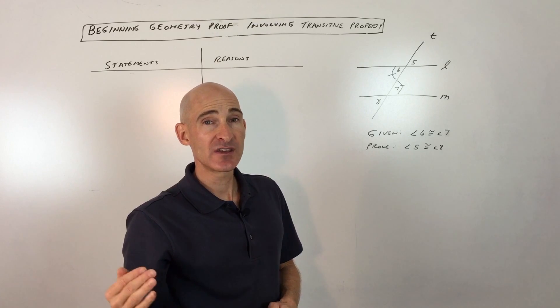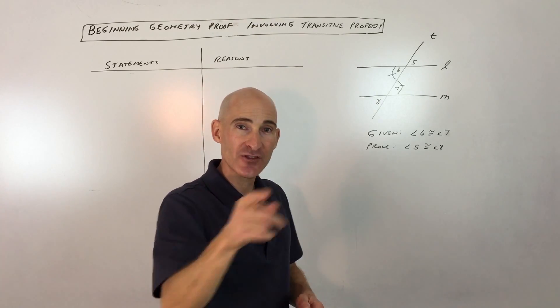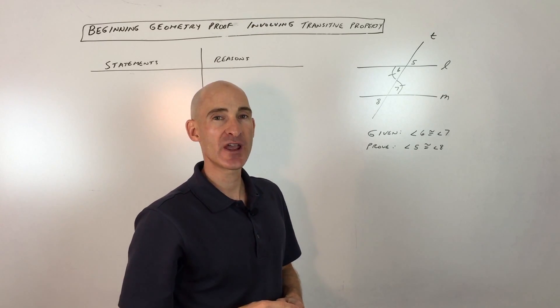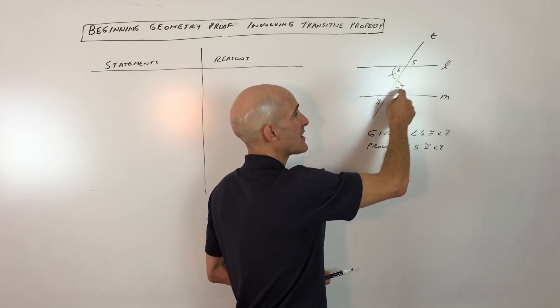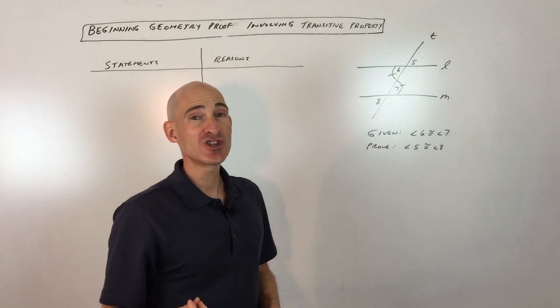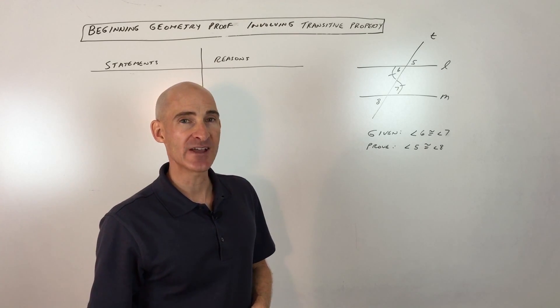Well, that's the transitive property. So you can think of the transitive property kind of like a train, like they're all connected together like the cars of a train. But essentially, if 5 is equal to 6 and 6 is equal to 7 and 7 is equal to 8, they're all equal to each other. So the first will naturally be equal to the last.